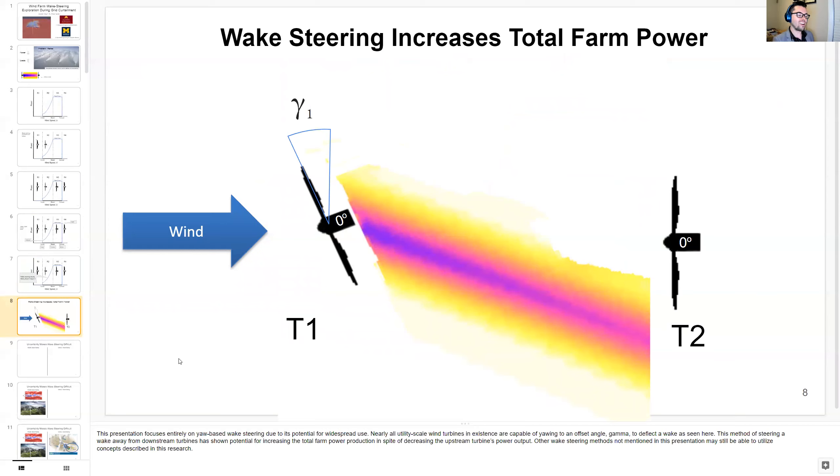This presentation focuses entirely on yaw-based wake steering due to its potential for widespread use. Nearly all utility-scale turbines in existence are capable of yawing to an offset angle of gamma to deflect wake. This method of steering away from downstream turbines has shown potential for an increase in the total farm power production in spite of decreasing the upstream turbine's power output. Other wake steering methods may still utilize concepts described in this research.